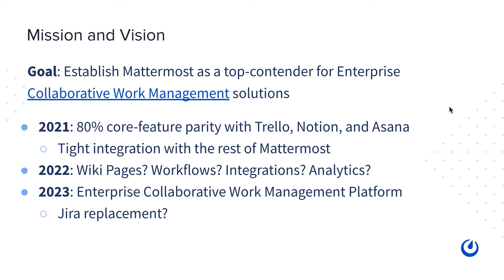In year two, we're looking at things such as wiki pages — which you might think of as a Confluence competitor — workflows, automations, integrations with third-party tools, and analytics. The data stored in your collaborative and project management solutions is extremely valuable, and tight integration lets you perform analytics to get a detailed view of what work is actually happening. In year three, the goal is to become an enterprise-grade collaborative work management leader and be able to replace an industry-grade solution such as Jira.